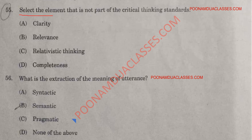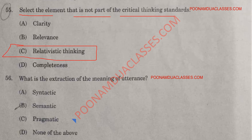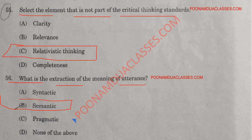Question number 55: Select the element that is not part of critical thinking standards. The correct answer is relativist thinking. Question number 56: What is the extraction of the meaning of an utterance? The correct answer is semantic. Semantic analysis is used to extract the meaning from a group of sentences.